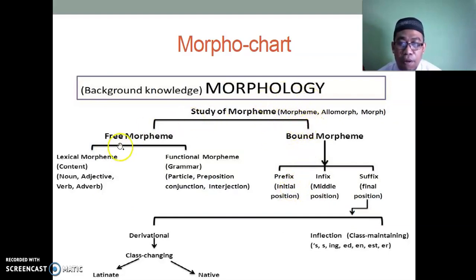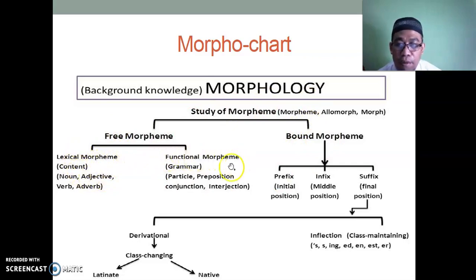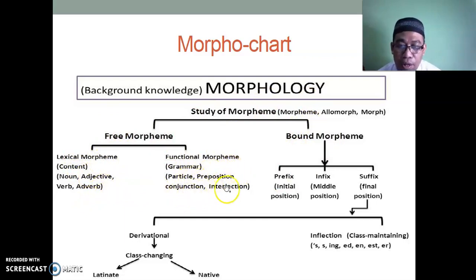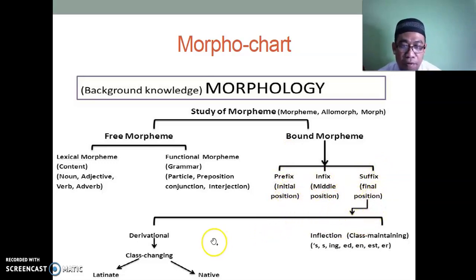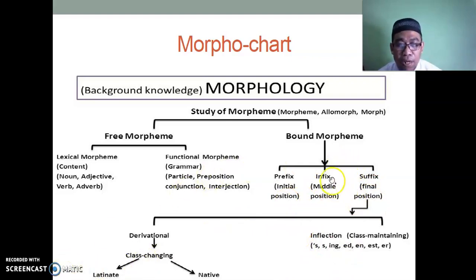Free morphemes include lexical morphemes — content words such as nouns, adjectives, verbs, and adverbs — and function morphemes such as particles, prepositions, conjunctions, and interjections. Bound morphemes include prefixes, infixes, and suffixes. Prefixes are in initial position, infixes in middle position, and suffixes in final position. Suffixes can be derivational or inflectional — we will discuss this further. In English, infixes are rare or nonexistent.